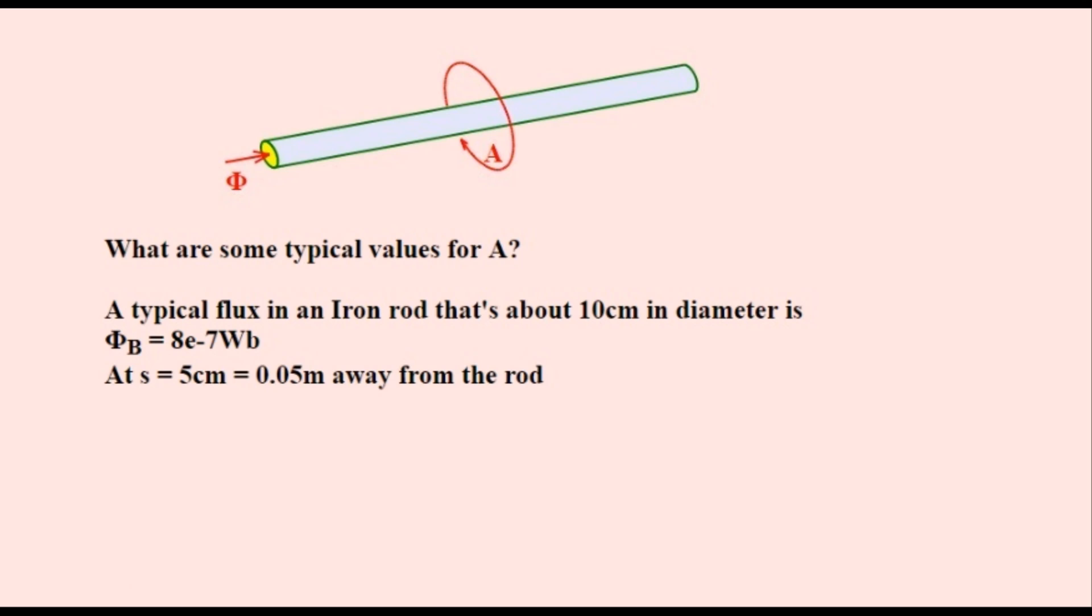We'll use this equation here that we've derived earlier to calculate the value of A. Substituting all of the values in, we get this result for A. And using engineering notation, we arrive at this more easily read figure, roughly being around 2.5 micro units.